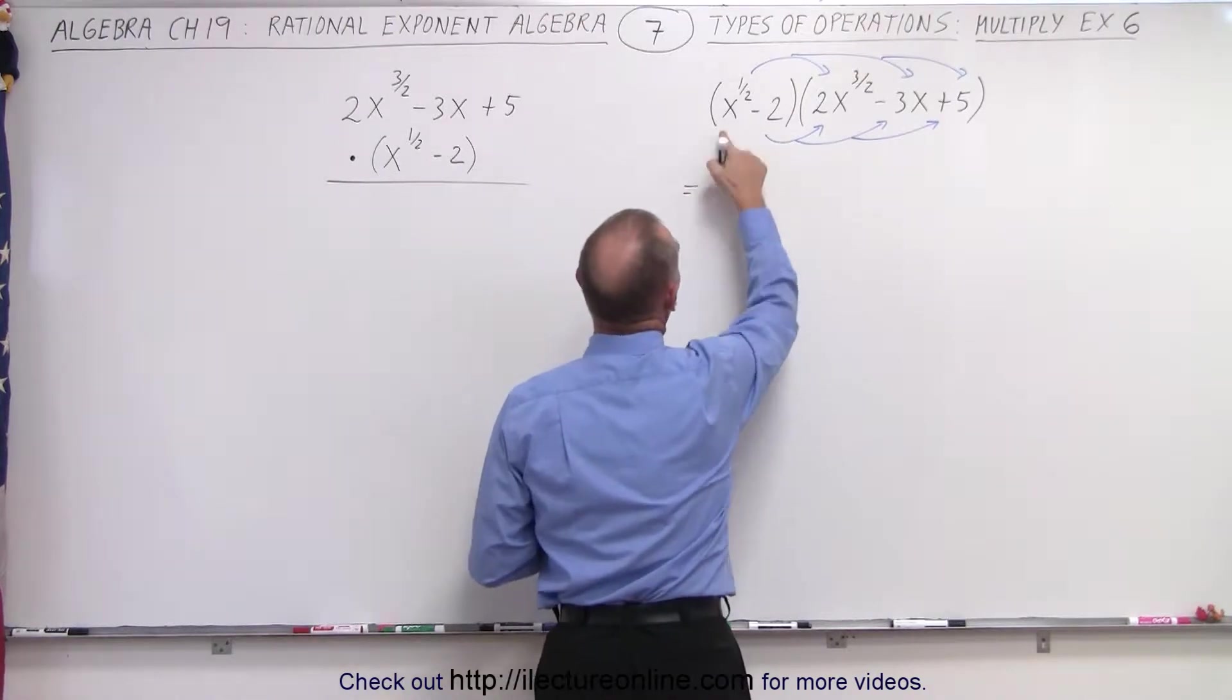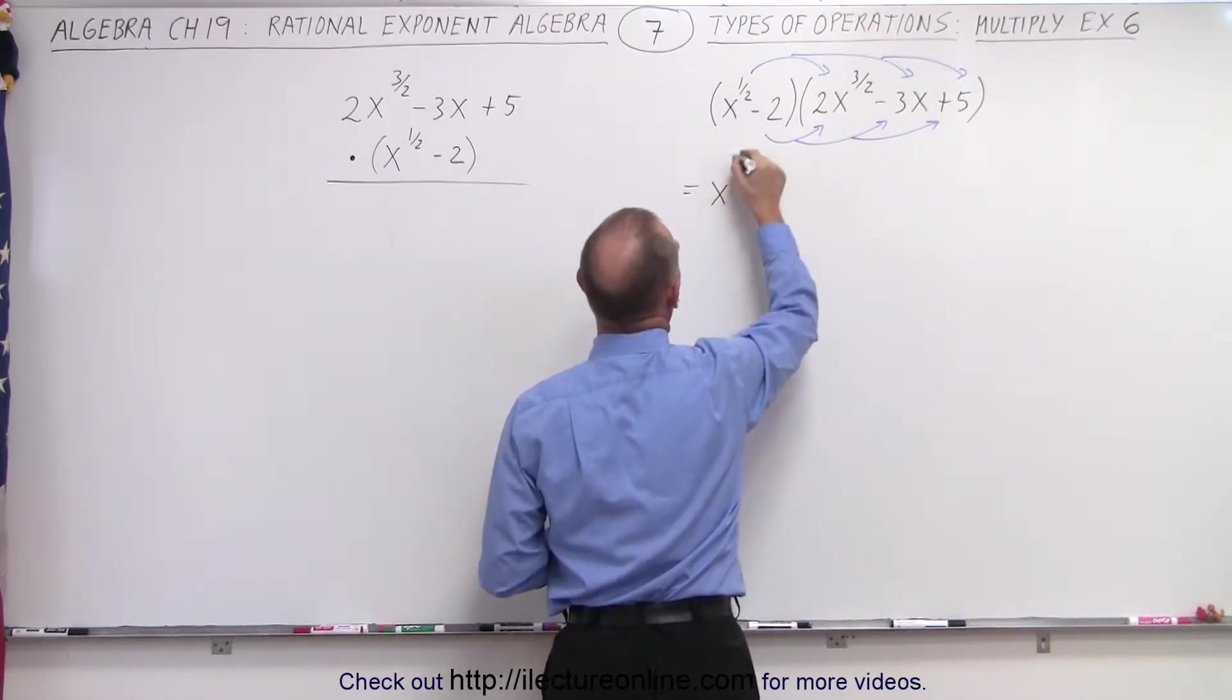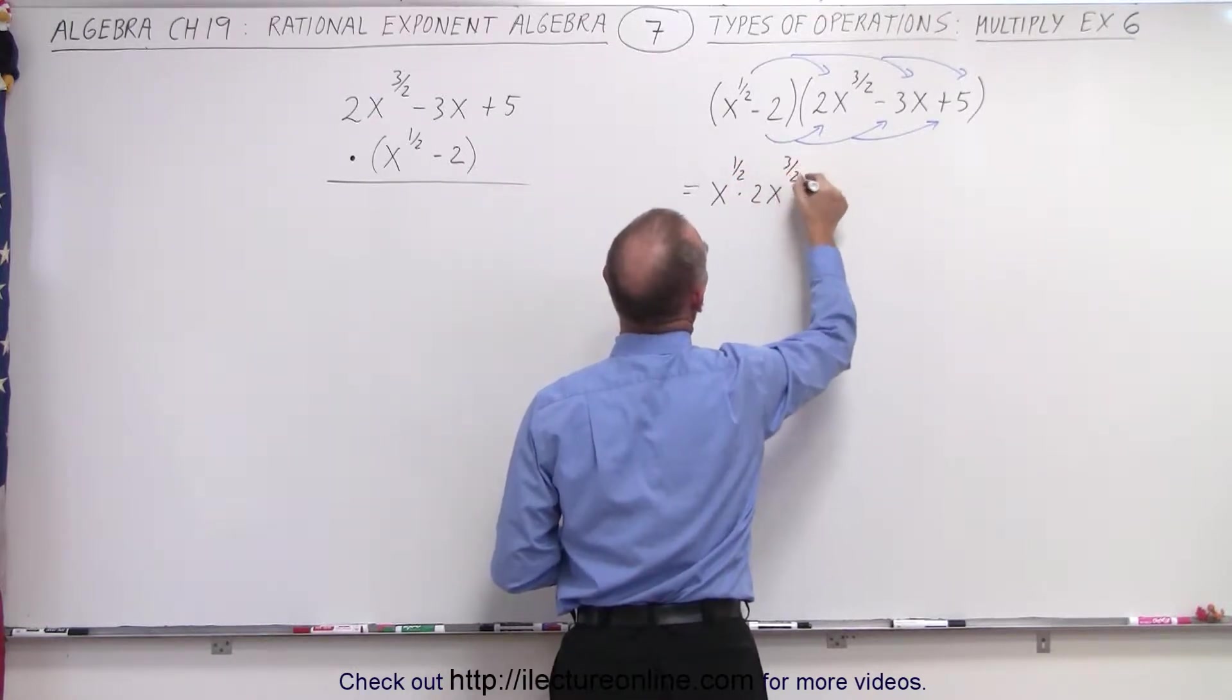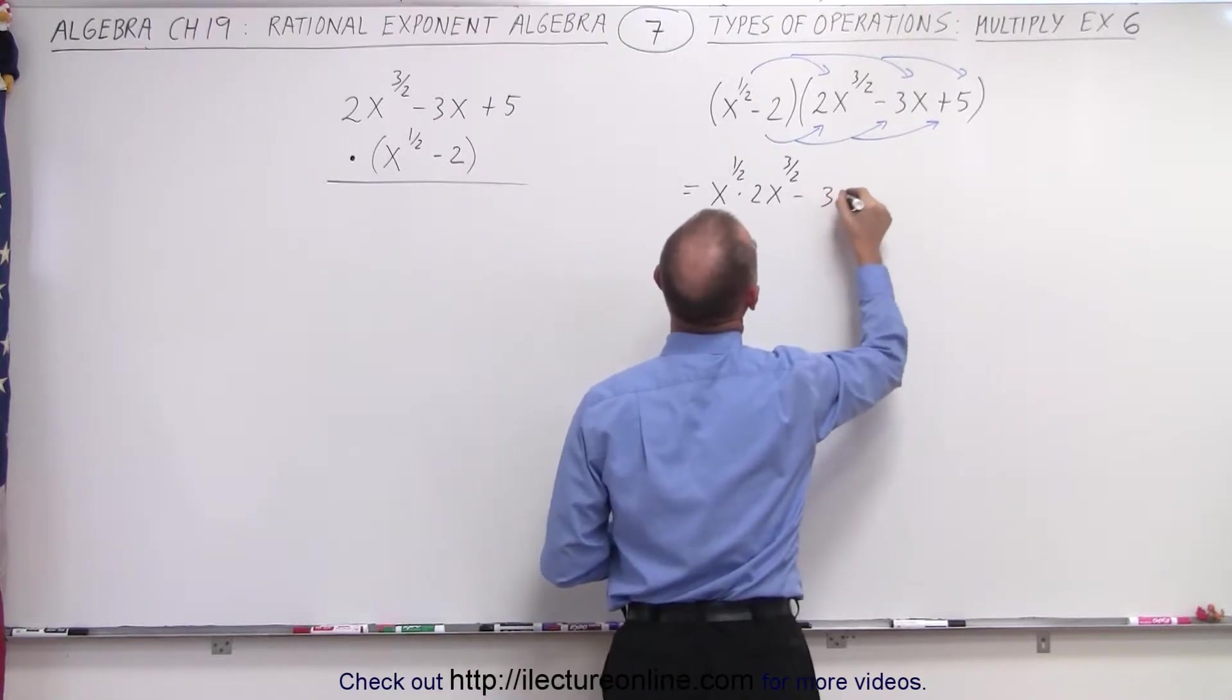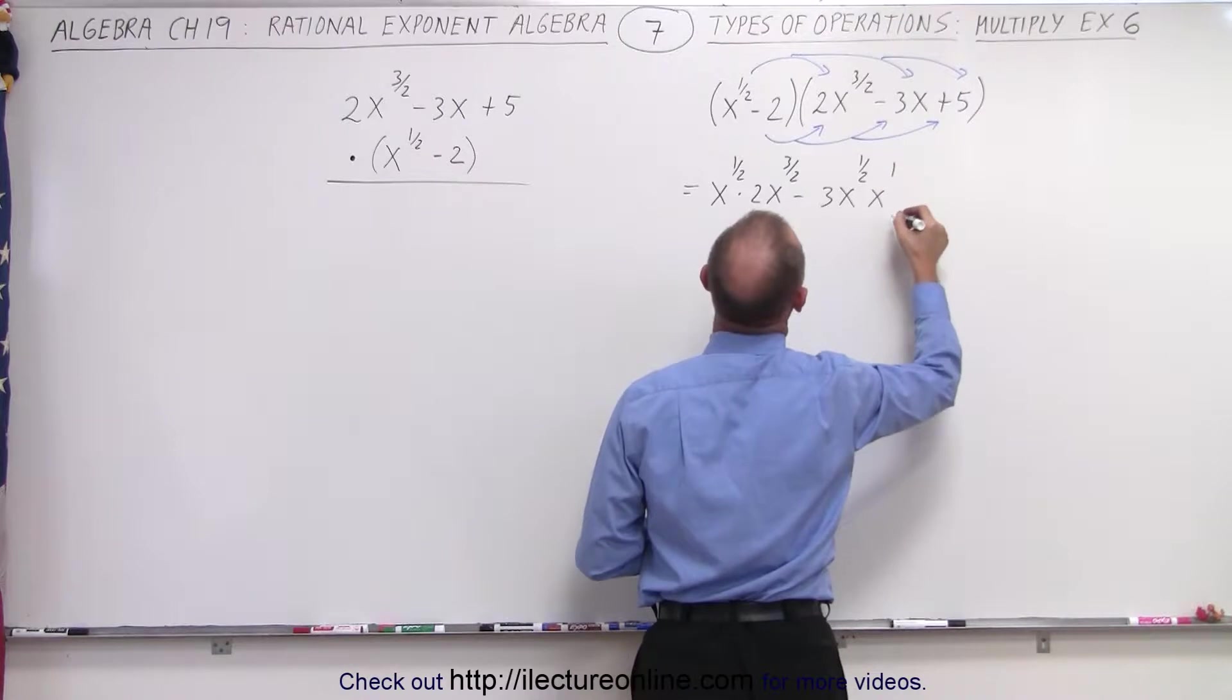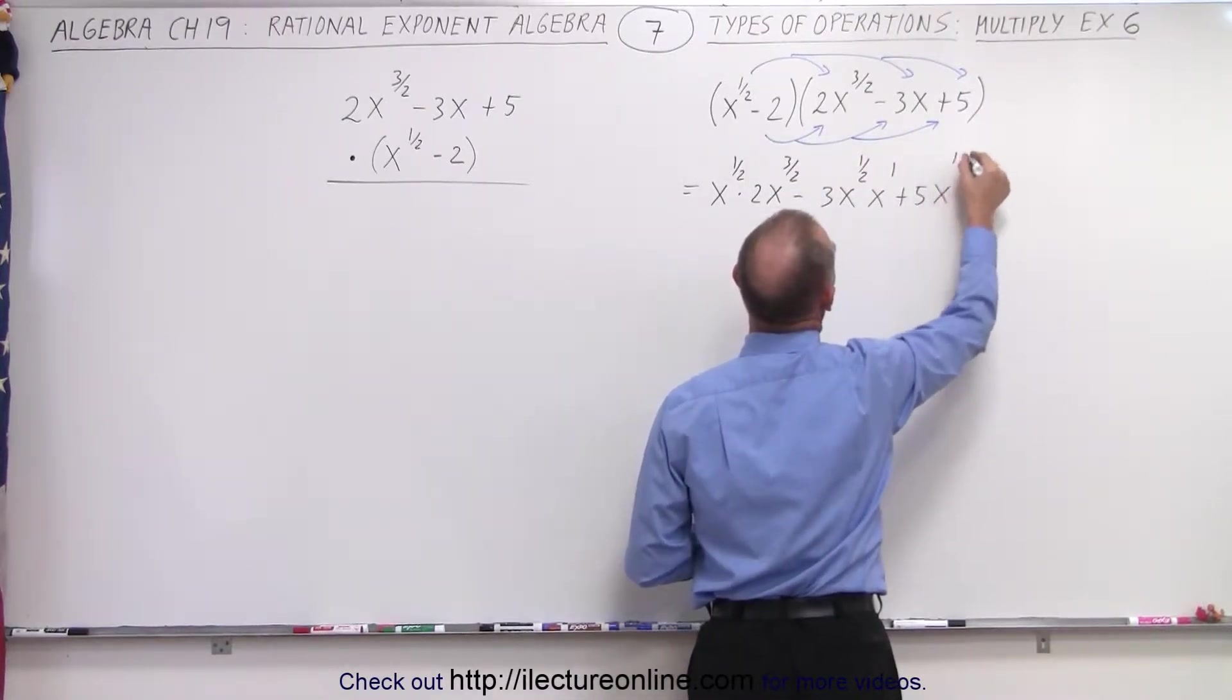We multiply this together. We get x to the 1 half times 2x to the 3 half. So we write x to the 1 half times 2x to the 3 halves. Then this times this is minus 3x to the 1 half x to the first power. And then multiply this times this would be plus 5x to the 1 half.